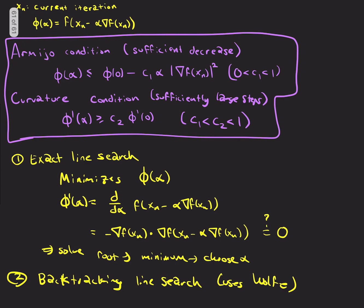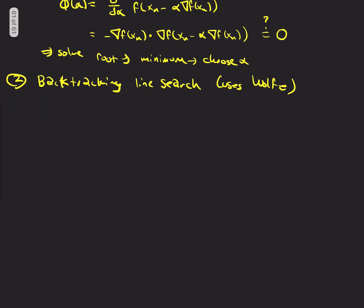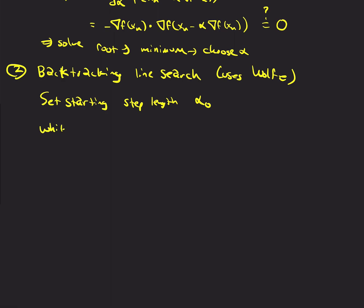And this uses the Wolfe conditions. And, again, the Wolfe conditions are just both of those put together. It's Armijo plus curvature. So, this approach says that you set a starting step length, α_0.